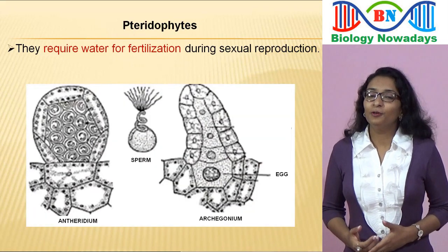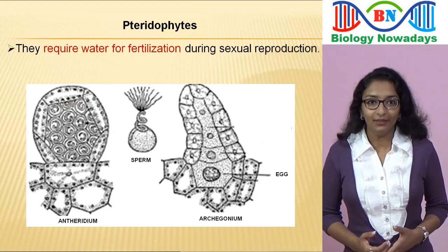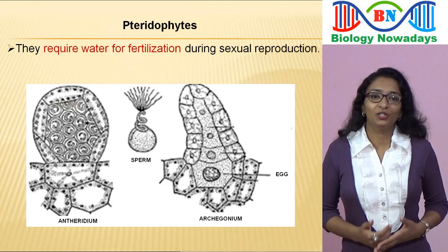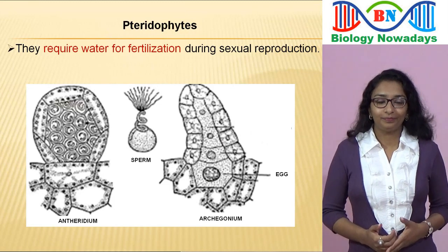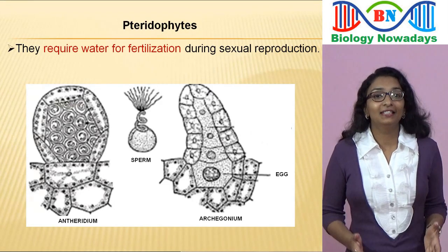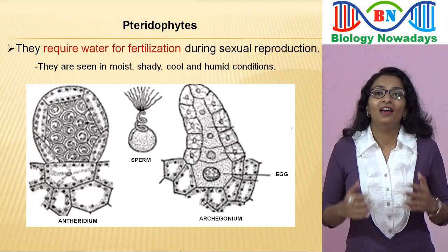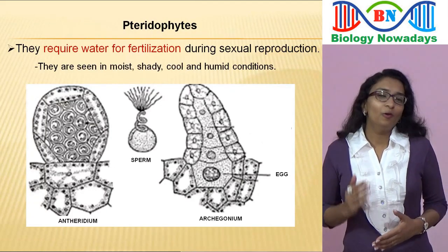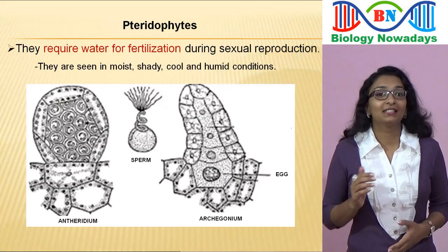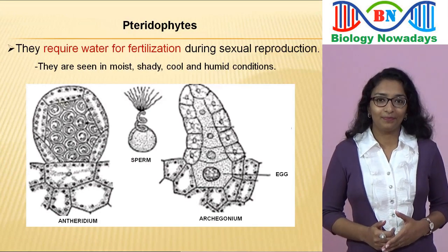The sperms produced in the male sex organs called antheridia swim through water to reach the egg cell in the archegonia. As they require water for fertilisation, they are seen in moist, shady, cool and humid conditions, mostly in the tropical regions. But some members are also seen in temperate regions.